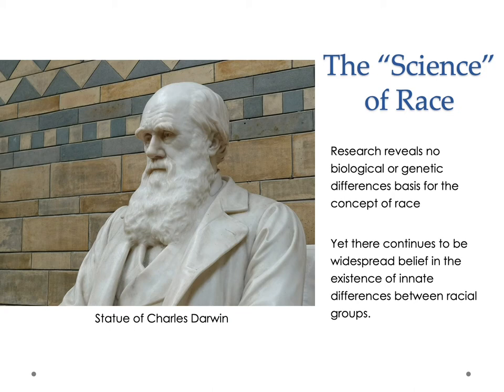The attempt by Linnaeus to categorize people into these subspecies was built upon by other scholars, as an attempt to justify the idea of natural differences among existing racial and ethnic groups. These natural differences were seen as inherent qualities of these groups — not a consequence of cultural history, not a consequence of economic development, but inherent to their very bodies and beings.